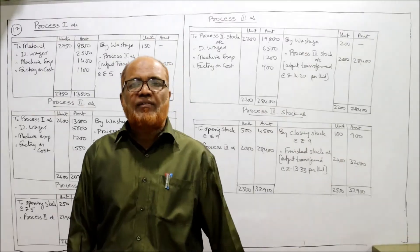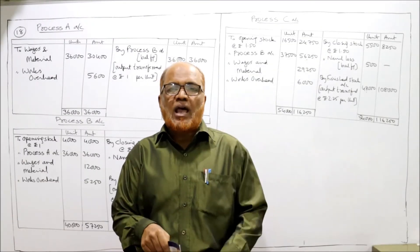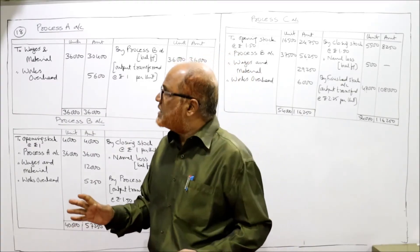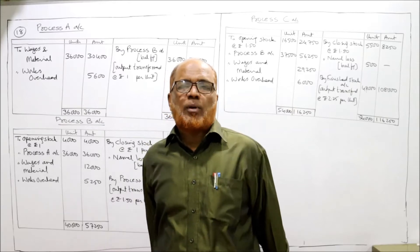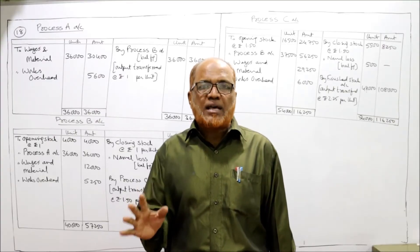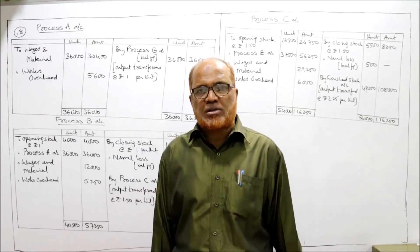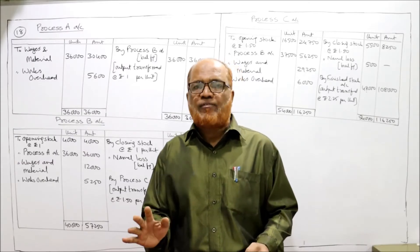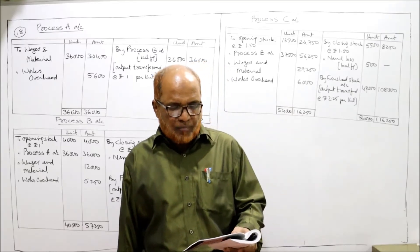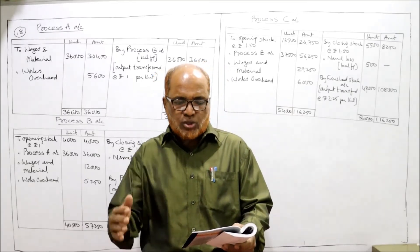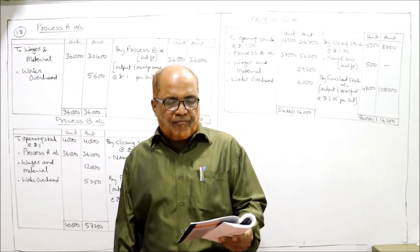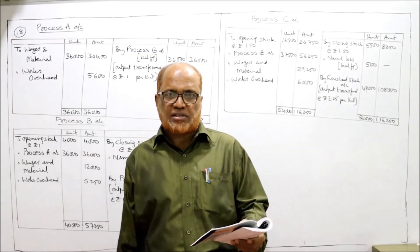Now we are on the last and final problem on process costing — problem number 18. Totally 18 problems are enough to get a good command for writing in examinations, and you will have a good grasp on process costing. The problem states: from the following figures, show the cost of the process of manufacture. The production of each process is passed on to the next process immediately on completion. Processes A, B, and C are involved. Wages and material and works overhead are given for all three processes on the debit side.